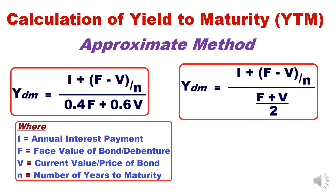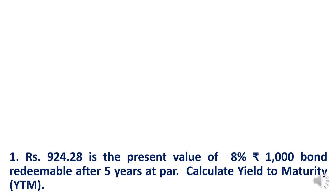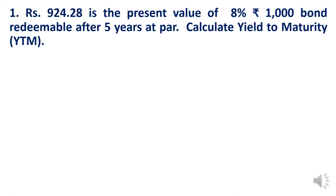These two formulas give an approximate YTM. To get the exact yield to maturity you need to apply the trial and error method, similar to the IRR method in capital budgeting. Now let's see a question: the present value of an 8%, Rs.1000 bond redeemable after five years at par is Rs.924.28. Calculate the yield to maturity.